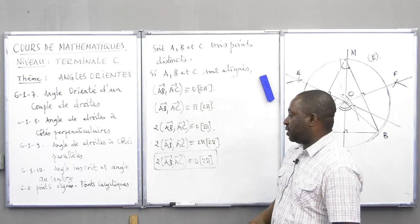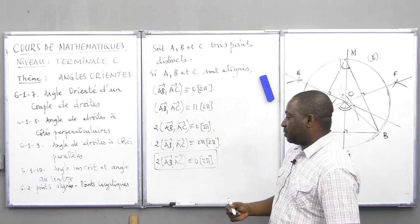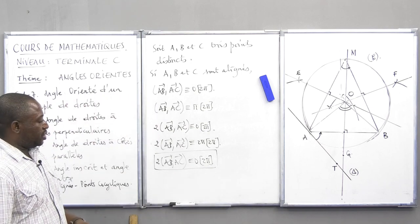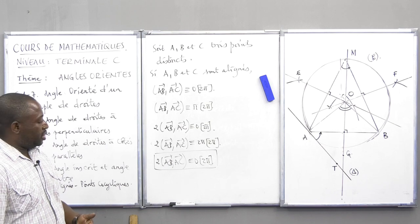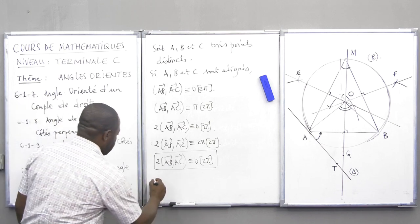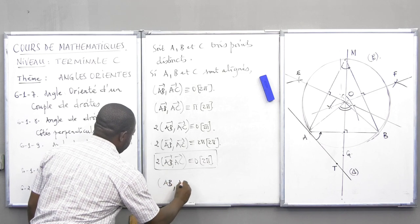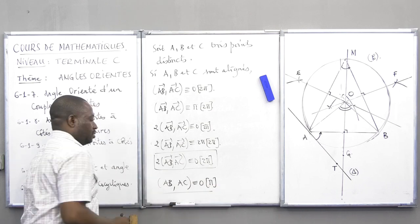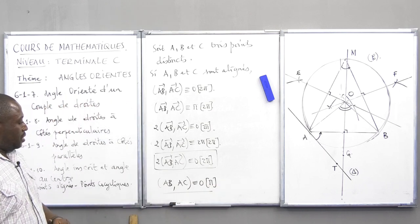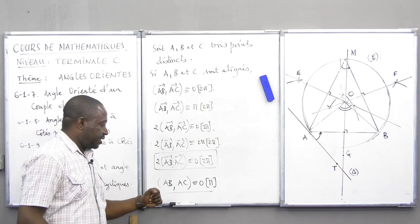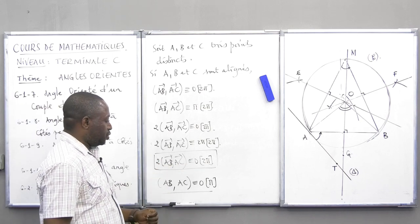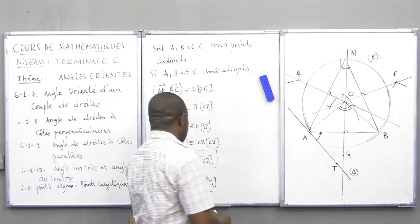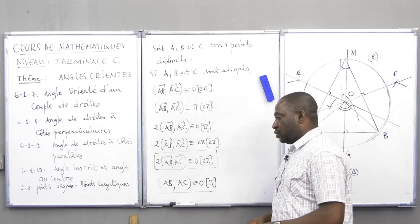Avec les angles de droite, on peut dire que si les points A, B, C sont alignés, les droites AB et AC sont confondues, et la mesure de l'angle (AB, AC) sera congrue à 0 modulo π. Donc, soit on travaille avec les angles de vecteur — 2·(AB, AC) congru à 0 modulo 2π — soit on travaille avec les angles de droite — l'angle (AB, AC) congru à 0 modulo π. Voilà en ce qui concerne l'alignement.